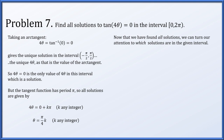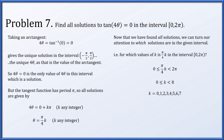We now find which values of k give theta in the interval from 0 to 2 pi. We want 0 ≤ pi over 4 times k < 2 pi, which gives 0 ≤ k < 8. So k can be 0, 1, 2, 3, 4, 5, 6, or 7, giving solutions: 0, pi over 4, pi over 2, 3 pi over 4, pi, 5 pi over 4, 3 pi over 2, and 7 pi over 4.